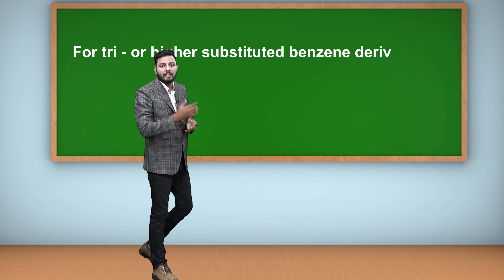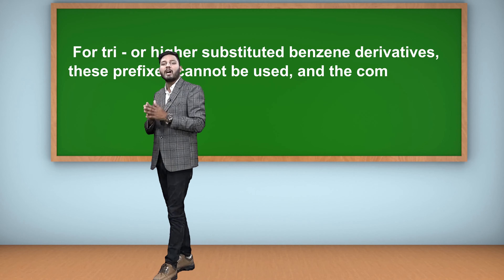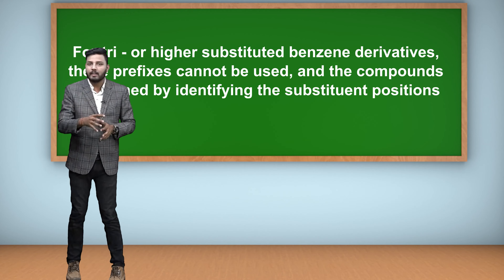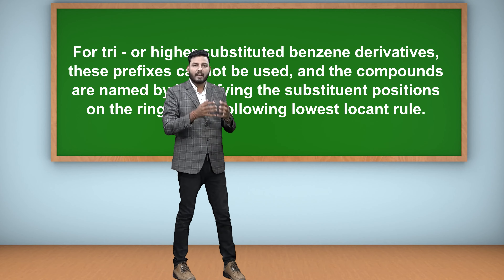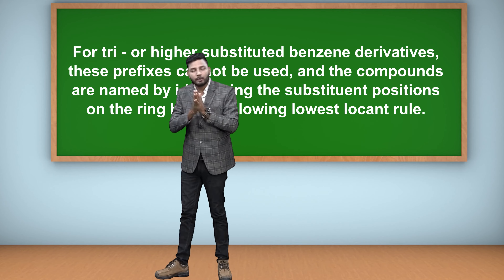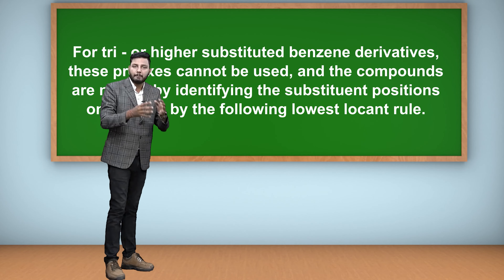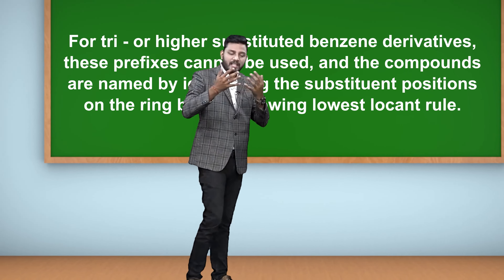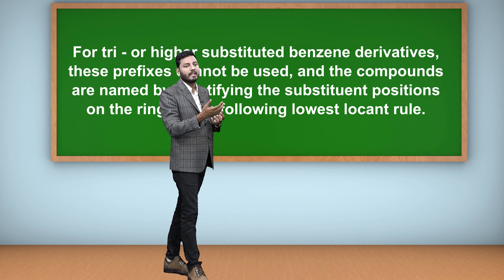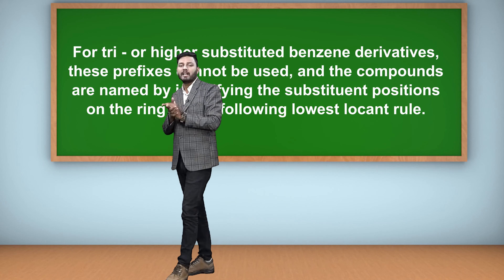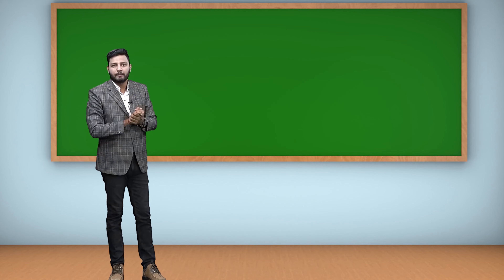Now, if we are given trisubstituted or higher substituted benzene derivatives, we do not use ortho/meta/para prefixes. For tri or higher substituted benzene derivatives, these prefixes cannot be used and the compounds are named by identifying substituent positions following the lowest locant rule. We number so that substituents get the lowest possible positions, and the substituents are arranged in alphabetical order — the one that comes first alphabetically is written first.